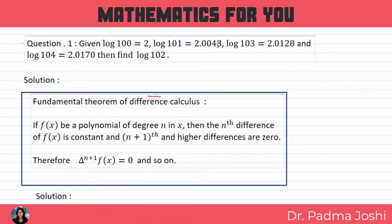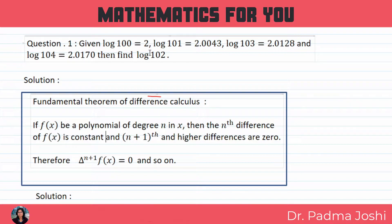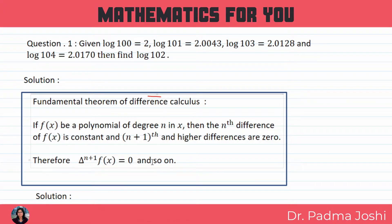Here the value has 4 decimal places. We have to follow the decimal. We will solve this question using the fundamental theorem of difference calculus. Missing term questions are solved by this theorem. If function of x is a polynomial of degree n in x, then the nth difference of f(x) is constant and the (n+1)th and higher differences are 0. Therefore, delta^(n+1) f(x) is equal to 0.